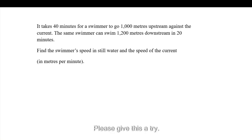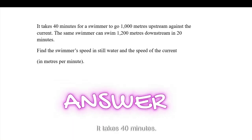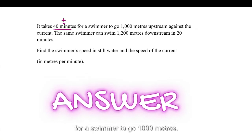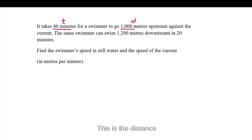Please give this a try. When you want to check the answer, continue the video. It takes 40 minutes for a swimmer to go 1000 meters upstream against the current. The same swimmer can swim 1200 meters downstream in 20 minutes.